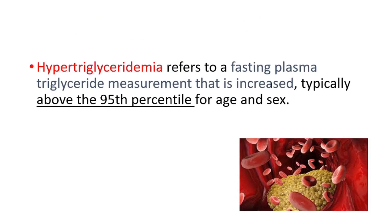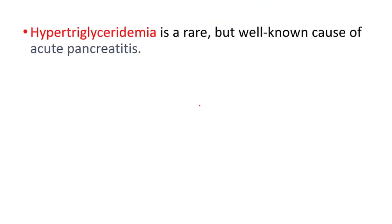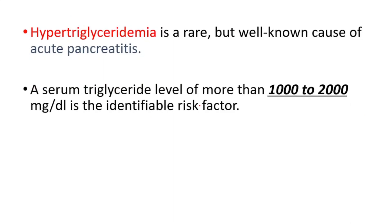But we have other causes. For example, hypertriglyceridemia, which refers to a fasting plasma triglyceride measurement that is increased, typically above the 95th percentile for age and sex. It's a rare but well-known cause of acute pancreatitis. A serum triglyceride level of more than 1,000 to 2,000 mg per deciliter is the identifiable risk factor.